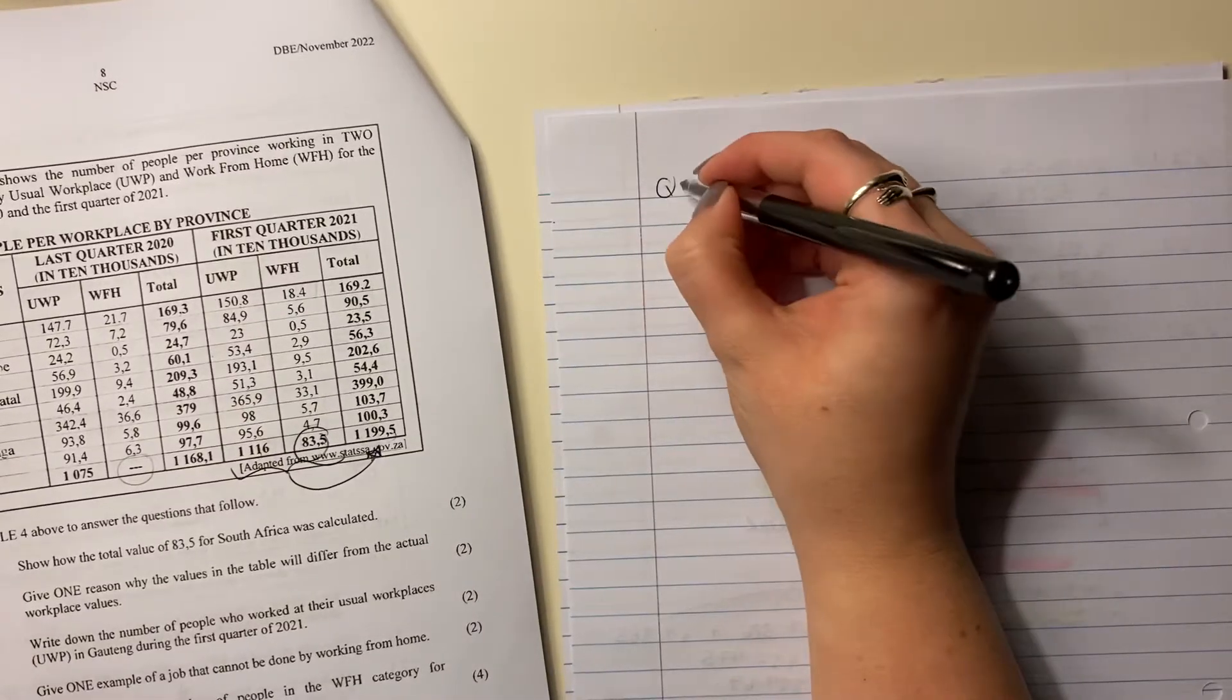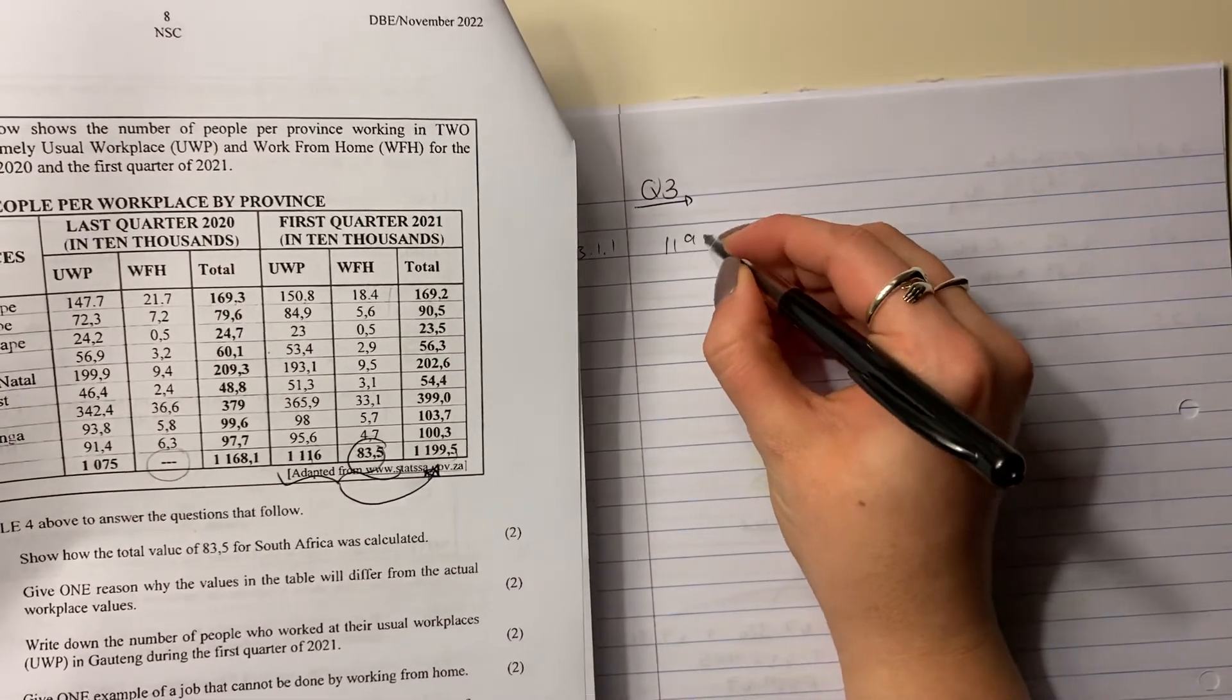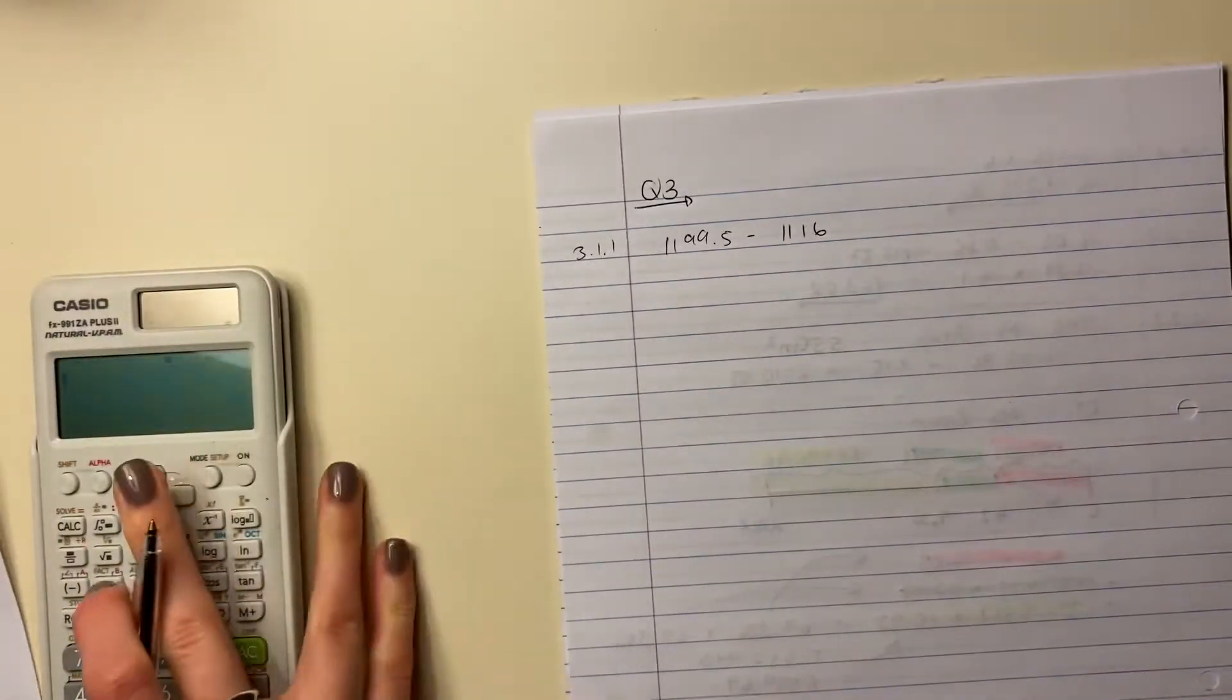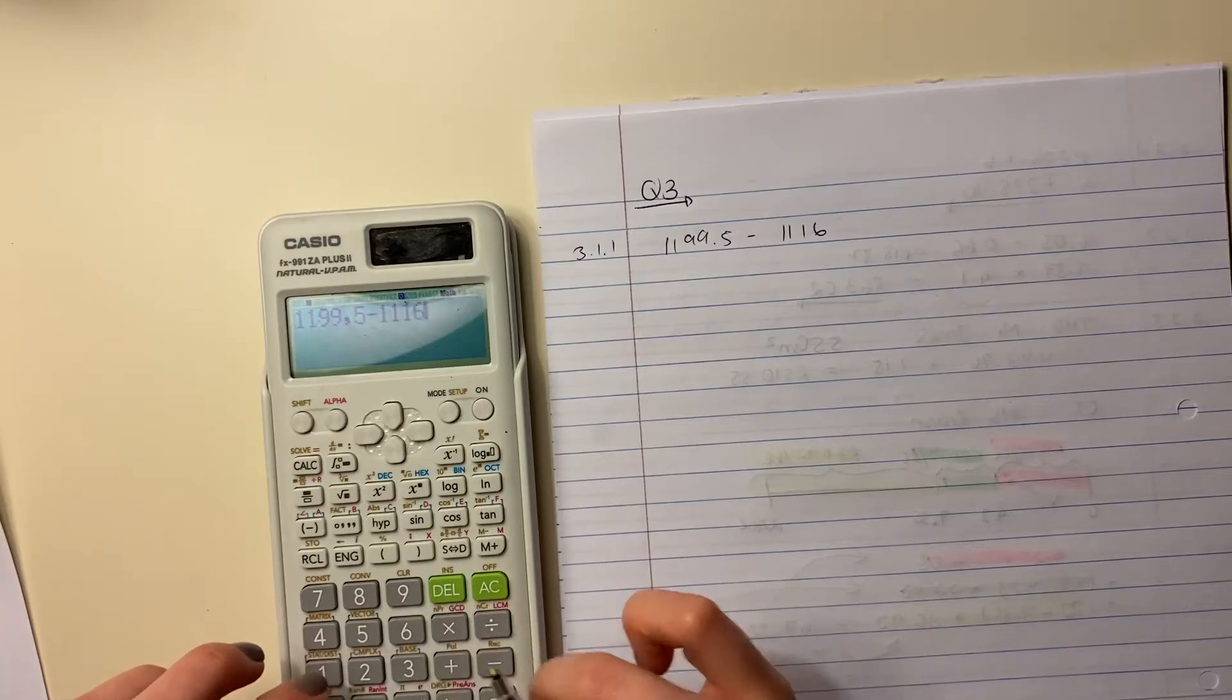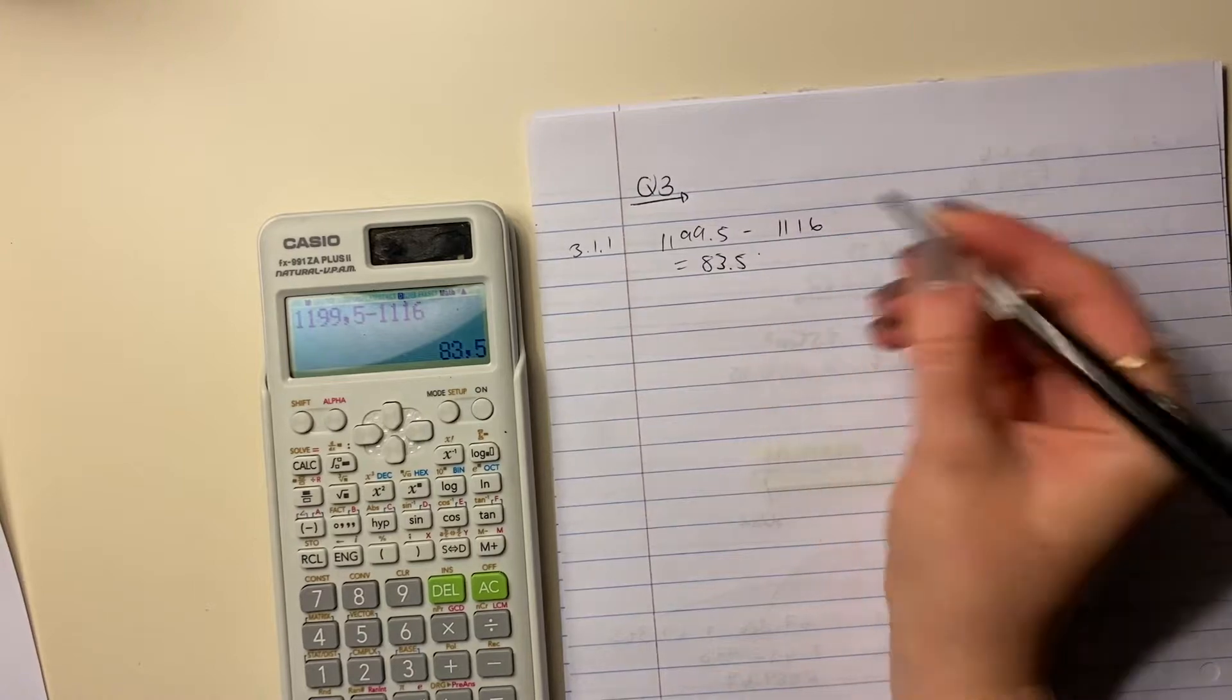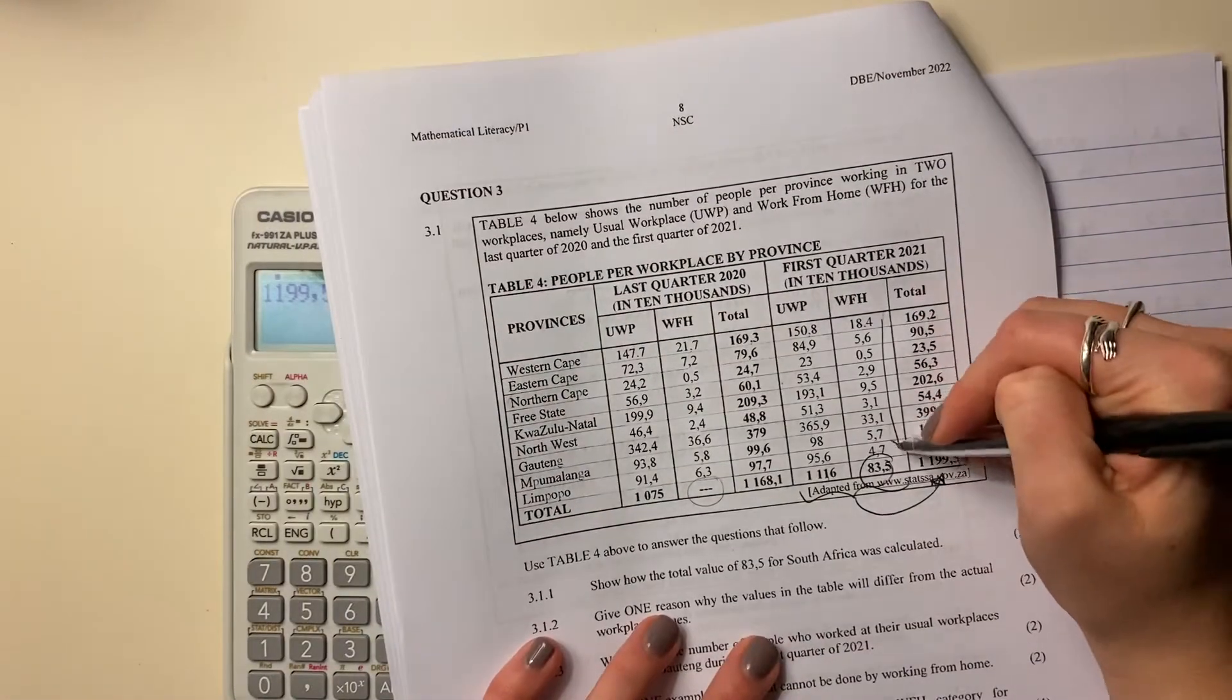Please always remember to start every question on a new page. 3.1.1, I'm going to say 1199.5 minus 1116. If you put that in your calculator, or if you're a whiz in your head, you can do this. And wonderful, 83.5. Fantastic. So you can do that, as I said, or you can add up all of these guys in this column.